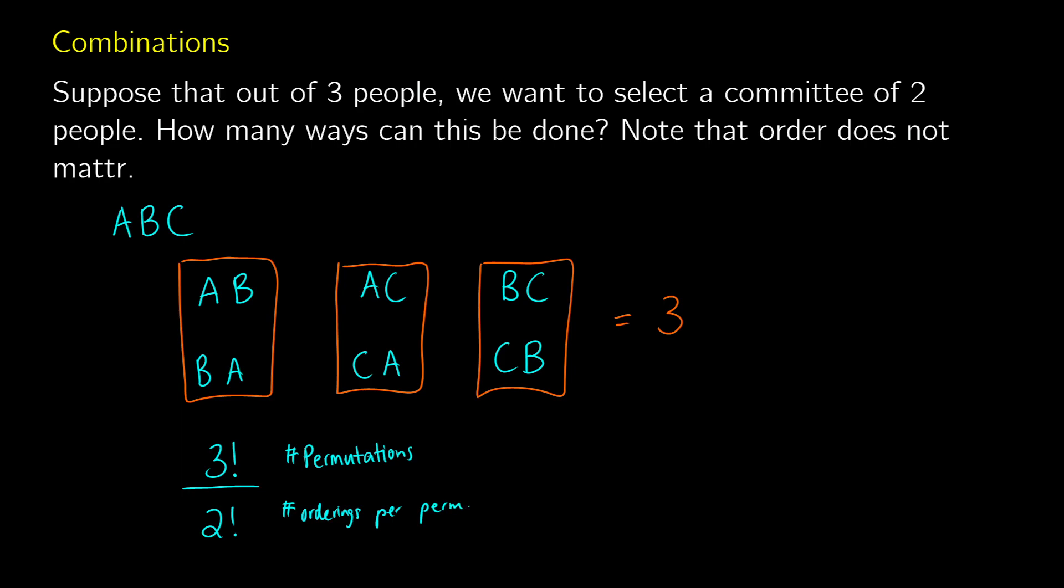And what we're going to get is three times two times one, two times one, which just gets us three as our result. So when we think about combinations, it's kind of like taking permutations. But we need to consider that the order doesn't matter. So we need to consider how many of those permutations are the same in each group and divide by that total number.